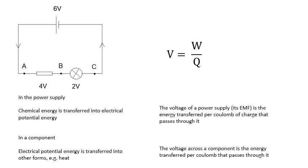This is a very important equation: V = W/Q. A volt is a joule per coulomb. If the power supply is six volts, every coulomb gets six joules of electrical potential energy. W is the energy transferred — energy transfer and work are virtually the same thing — energy transferred per coulomb. The voltage across a power supply is called its EMF (electromotive force): energy transferred per coulomb of charge passing through it. The voltage across a component is the energy transferred per coulomb passing through it.